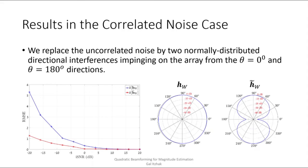So first of all, let's take a look here at the RMSE plot. And we observe that for low input SNRs, the RMSE with the quadratic Wiener, which is right here in the red curve, is significantly lower than the RMSE with the linear Wiener beamformer, which is shown right here in the blue curve.